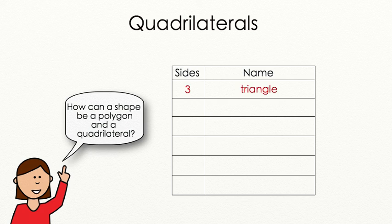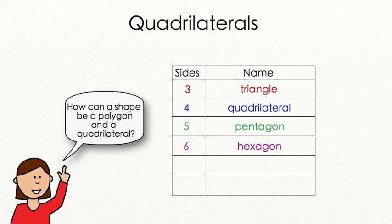For example, a three sided polygon is called a triangle, a four sided polygon is called a quadrilateral, a five sided polygon is called a pentagon, a six sided polygon is called a hexagon, a seven sided polygon is called a heptagon, and an eight sided polygon is called an octagon.